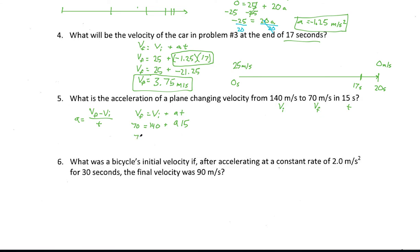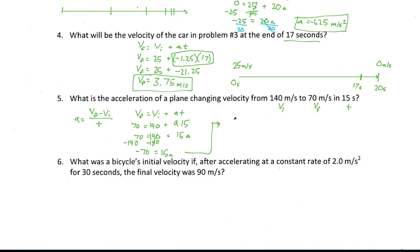My final velocity is 70, my initial velocity is 140, I don't know my acceleration, and my time is 15 seconds. I'll rewrite the formula with the variable term last: 70 = 140 + 15A. The 140 is furthest from the variable, so let's get rid of it: 70 minus 140 is negative 70, equals 15A. Rewriting up here for space: negative 70 = 15A. A is being multiplied by 15, so divide both sides by 15.